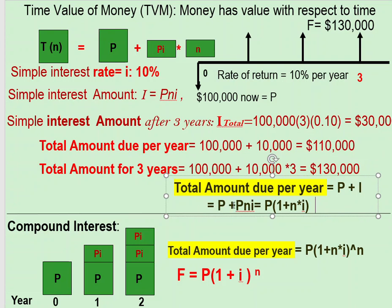The future value formula for simple interest is F = P + P×i×n, which is P times (1 + i×n). This is simple interest rate. Compound interest rate is different — n can be one, two, three, or four years, but the key distinction is how the interest is calculated each period.